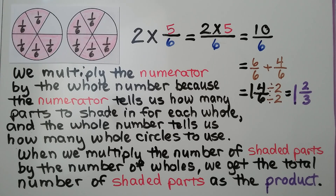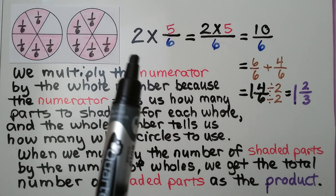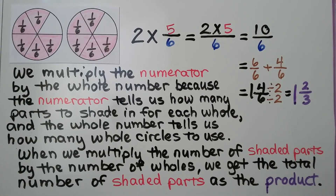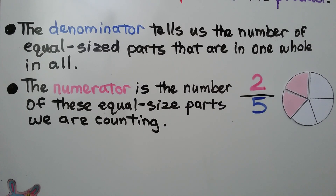We multiply the numerator by the whole number because the numerator tells us how many parts to shade in for each whole, and the whole number tells us how many whole circles to use. The denominator tells us the number of equal-sized parts that are in one whole, and the numerator is the number of these equal-sized parts we are counting.